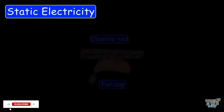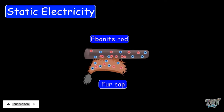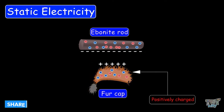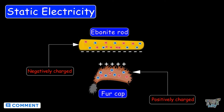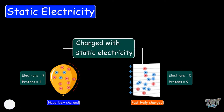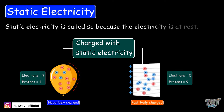We have learned that static electricity results due to the movement of electrons from one object to another, which results in a more positive charge in the atoms of the object that loses electrons and a more negative charge in the atoms of the object which gains electrons. The object with imbalanced electrons is called charged with static electricity, and this electricity is called static electricity because the electricity is at rest.